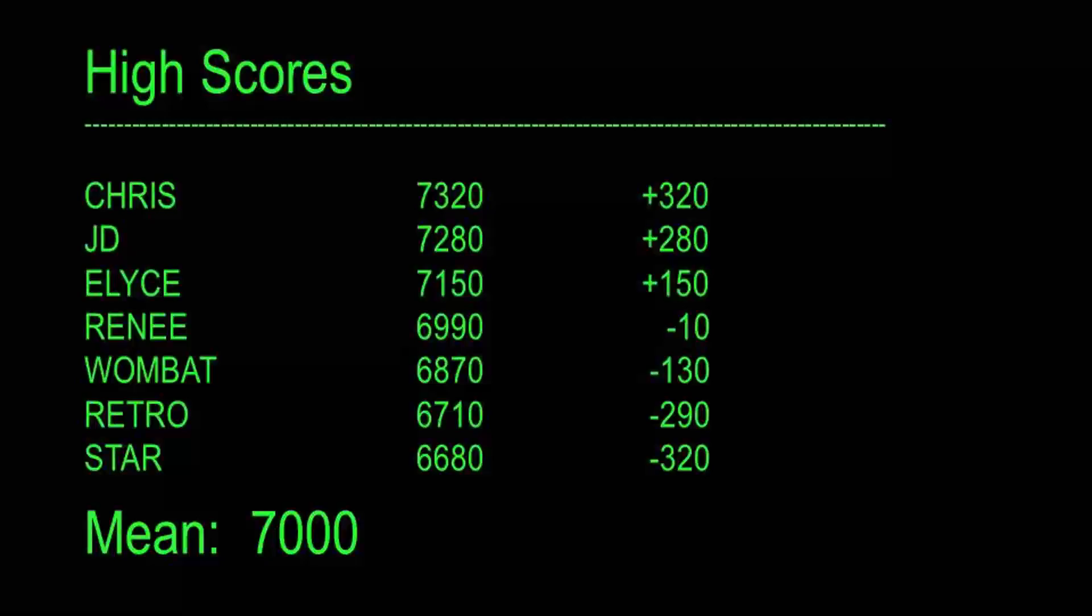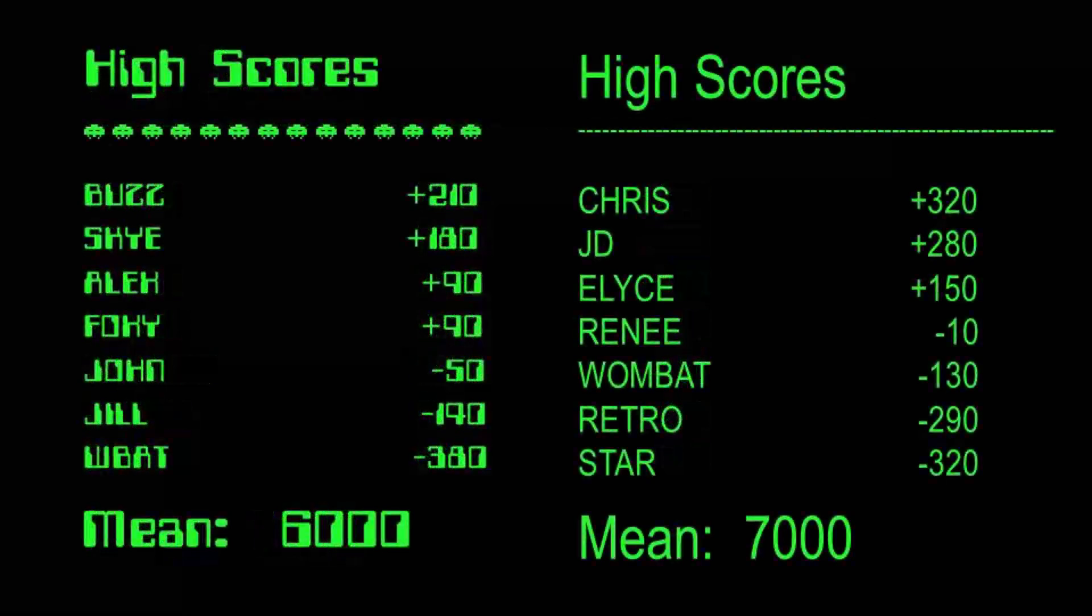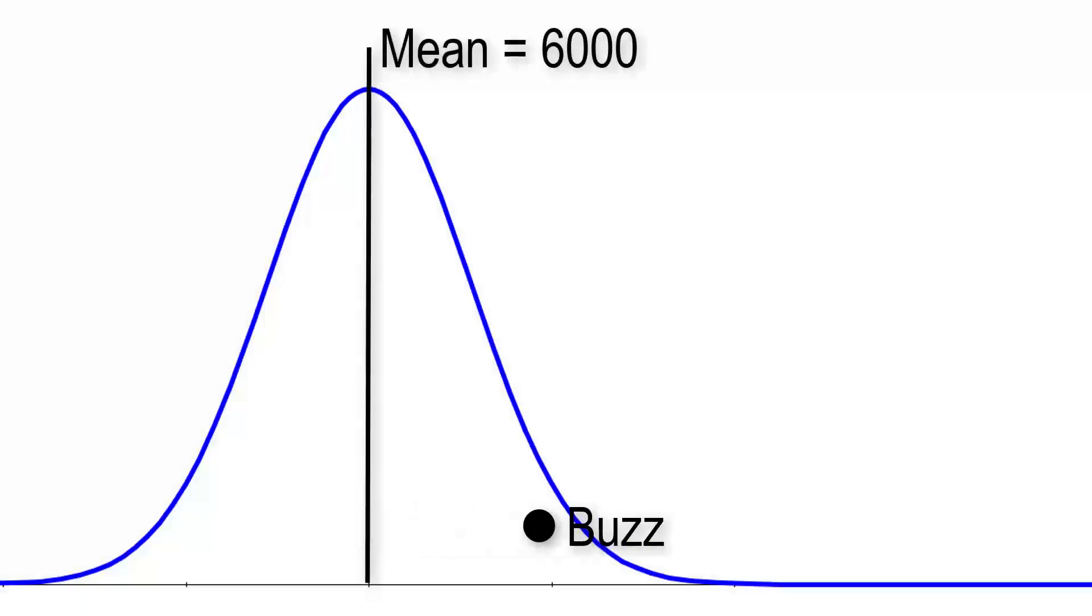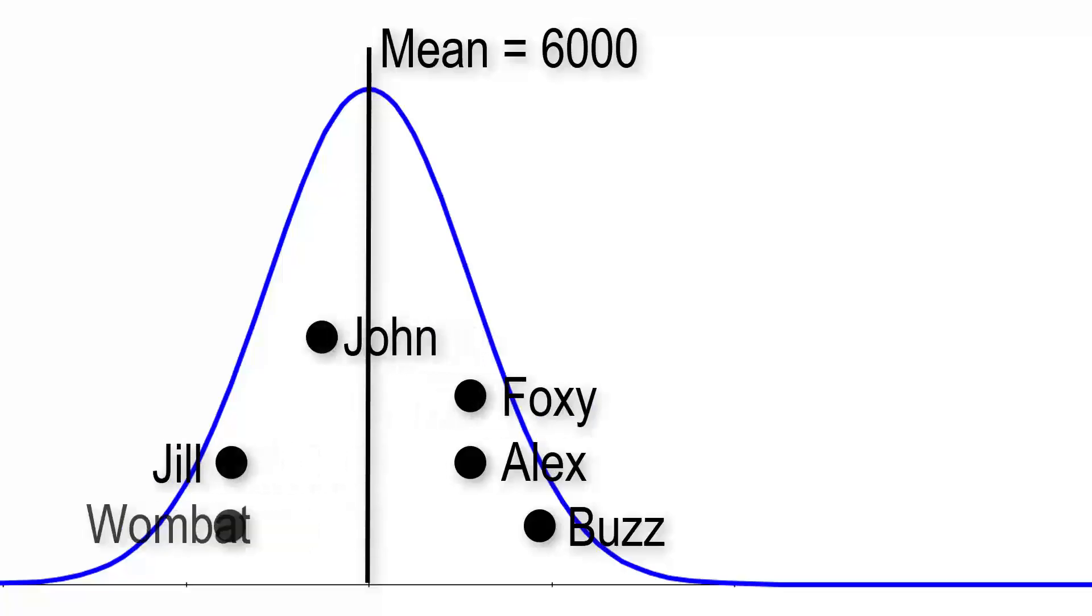We could compare that to our current day gamers. The problem is we still don't have enough information to complete the comparison. Just because an original gamer was 100 points above average doesn't tell us whether they're any better or worse than a current day gamer who is also 100 points above the average. What we need to know now is how much the scores were spread out around their respective average. That is, the standard deviation of each distribution.